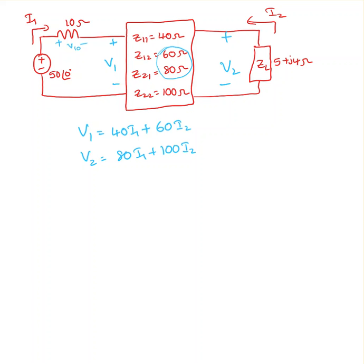Now I have four unknowns: I don't know V1, I don't know V2, I don't know i1, and I don't know i2. So I need to have four equations. If you look at loop one and apply KVL...